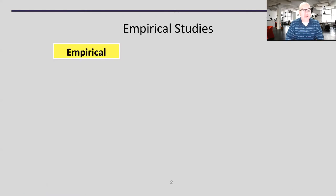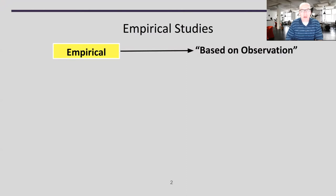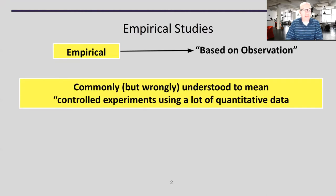I want to start with some basics about empirical studies and what they are and what they aren't. The term empirical simply means based on observation. When we talk about doing empirical studies, we're talking about gathering information and observations of study participants to draw some conclusions. Empirical study is commonly but wrongly understood to mean a controlled experiment using a lot of quantitative data. This is one type of empirical study, but it's not the only type — there are many others that will be relevant in your context.